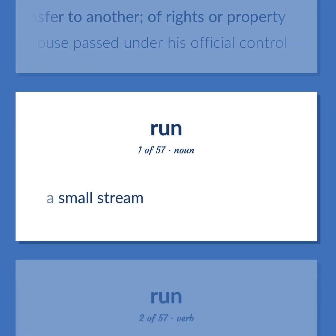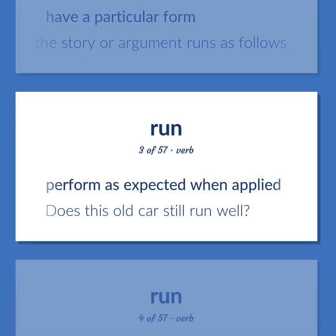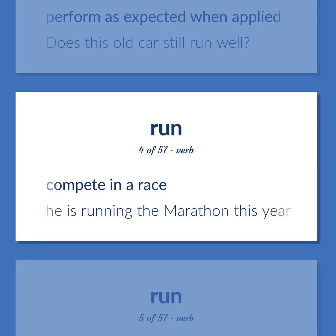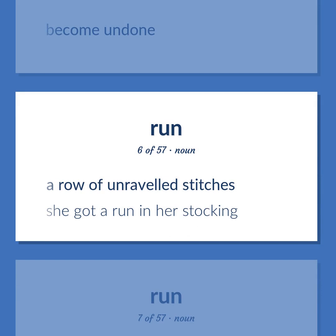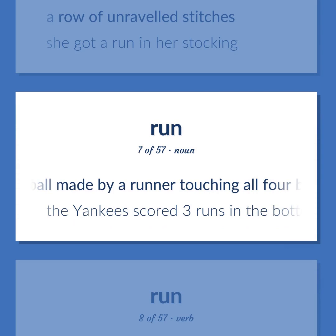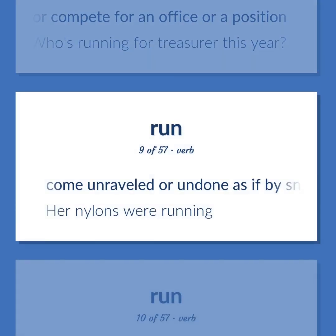A small stream. Have a particular form. The story or argument runs as follows. Perform as expected when applied. Does this old car still run well? Compete in a race. He is running the marathon this year. Become undone. A row of unraveled stitches. She got a run in her stocking. A score in baseball made by a runner touching all four bases safely. The Yankees scored three runs in the bottom of the ninth. Run, stand, or compete for an office or a position. Who's running for treasurer this year? Come unraveled or undone as if by snagging. Her nylons were running.